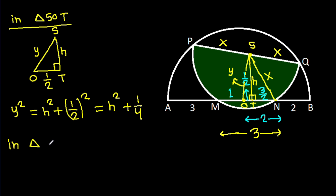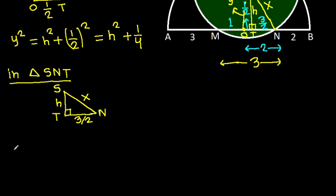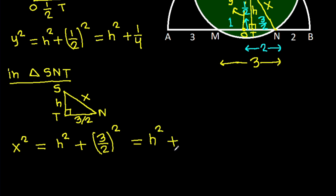And in triangle SNT, this angle is 90 degrees. SN is X, ST is H, and NT is 3 over 2. So X square will be H square plus 9 over 4.